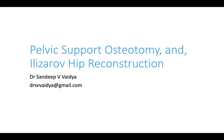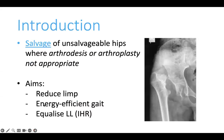Hello everyone. In this talk we shall discuss the pelvic support osteotomy (PSO) and Ilizarov hip reconstruction (IHR). Both PSO and IHR are salvage surgeries used for unsalvageable hips where arthrodesis or arthroplasty are not appropriate options. The aims of this surgery are to reduce the limb, provide the child with an energy-efficient gait, and in the case of IHR, leg length discrepancy can also be corrected.